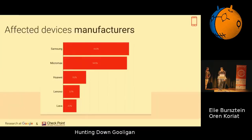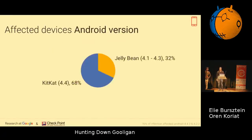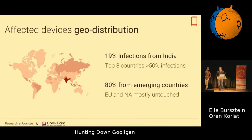In terms of affected devices, the distribution was standard across phone makers. Micromax is worth noting — it's a very popular phone maker in India and Asia, so its presence is unsurprising, reflecting a distribution you'd expect in emerging countries. The exploit kit only worked for Android 3 and 4, so we only saw Android versions KitKat and Jellybean. We did find additional devices running Android 5 and above, but they were not infected by Gooligan itself. In terms of geography, 90% came from India and the top eight countries account for 50% of infections. Europe and North America, with more recent devices, were largely unaffected.